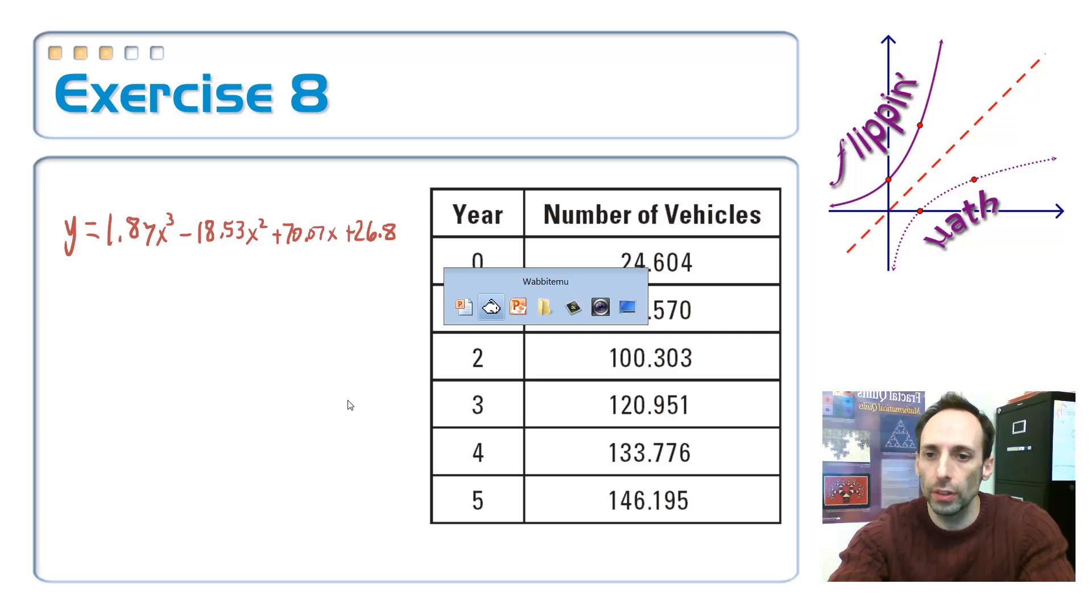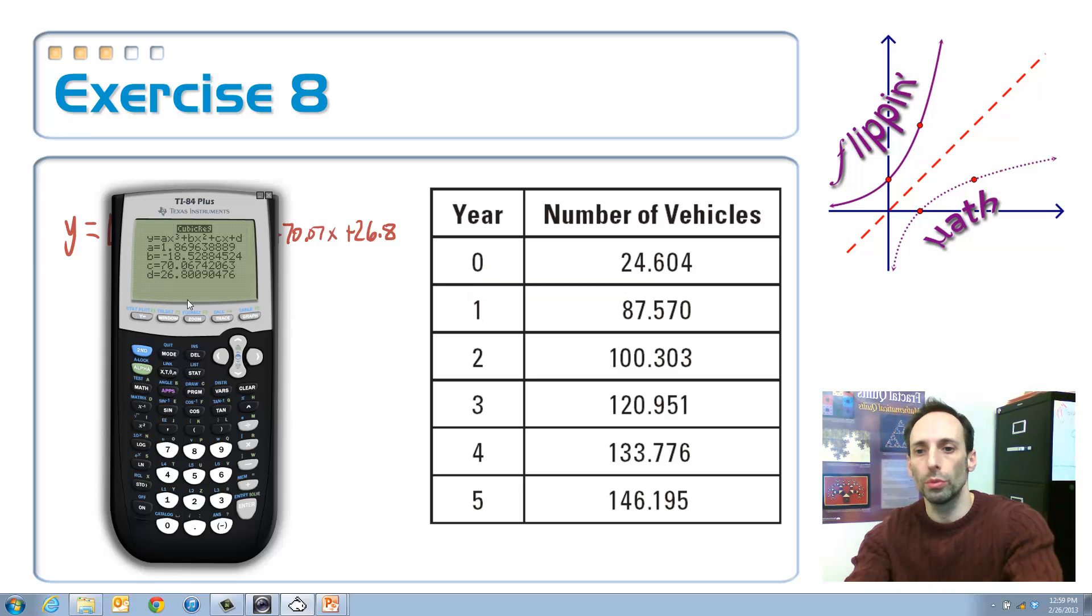Let's look back at the graph and calculator here. Let's see how well it went through those dots. Let's go to graph. Oh yeah. It looks pretty good. All right. So there's my cubic regression model.